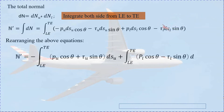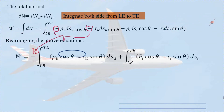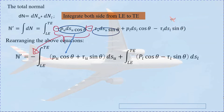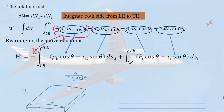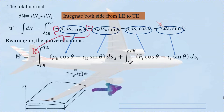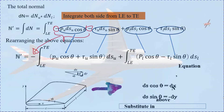We rearrange using the differential elements dS_U and dS_L for the upper and lower surfaces. Taking the curvature of the aerofoil into account: dx gives us the cos theta term and dy gives us the sin theta term. Collecting terms for the upper surface: P_U cos theta plus tau_U sin theta dS_U, and for the lower surface: P_L cos theta minus tau_L sin theta dS_L.